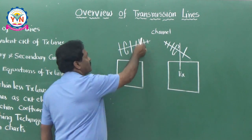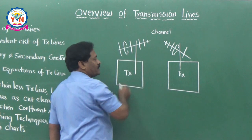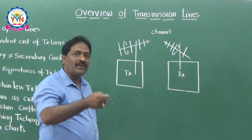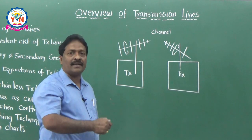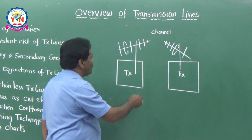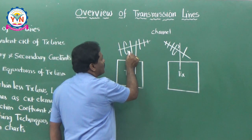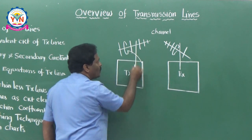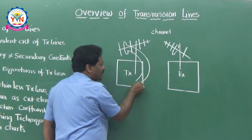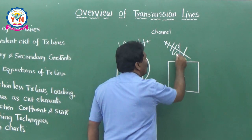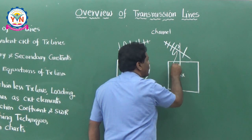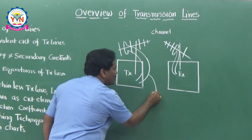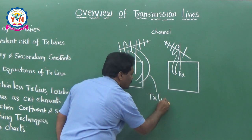Coming to the transmission line, it is a physical structure. It is not the means of radiating information. Using the physical structure only, it is guiding the electrical energy from one place to the other. For example, if you want to take information from transmitter to antenna, you have to connect with a physical medium. Similarly on the receiving side, you connect the antenna to the receiver with physical structure — that physical structure is nothing but the transmission line.